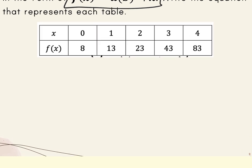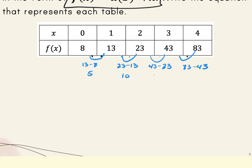First, find the first common difference. So 13 minus 8, 23 minus 13, 43 minus 23, 83 minus 43 gives us 5, 10, 20, 40. Then find the ratio of those: 10 to 5, 20 to 10, 40 to 20 — all result in 2. So b equals 2.